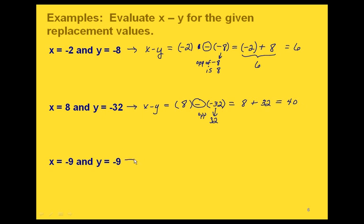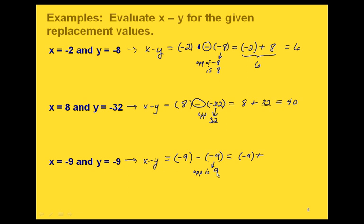Finally, we replace x with negative 9 and y with negative 9. Rewriting the subtraction gives us plus the opposite of negative 9, which is positive 9. So we have negative 9 plus positive 9. Since these two are opposites, when we add them together we get 0. So that's our final answer.